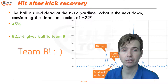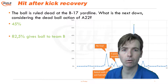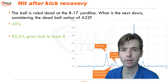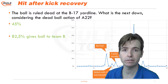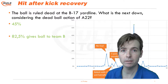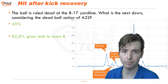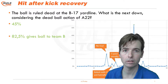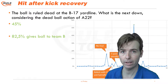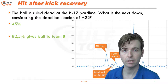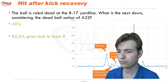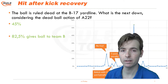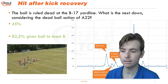This is a dead ball foul, so basically the play stands and the dead ball foul is enforced from the succeeding spot — from the B17 yard line. Team B gets the ball and they actually get a personal foul to go with it, so they also gain 15 yards extra, which leaves the ball at the B32 yard line.